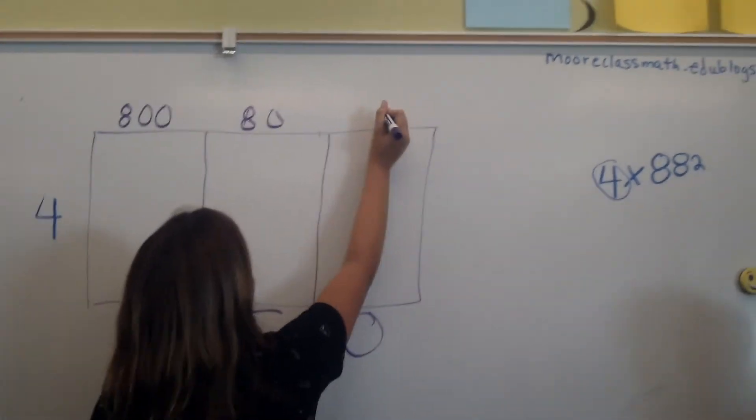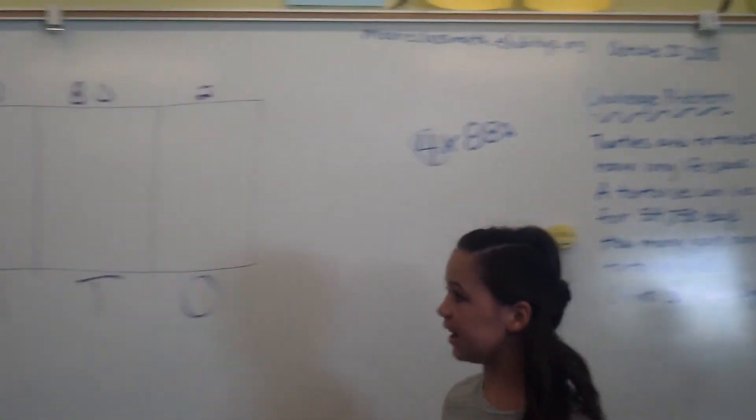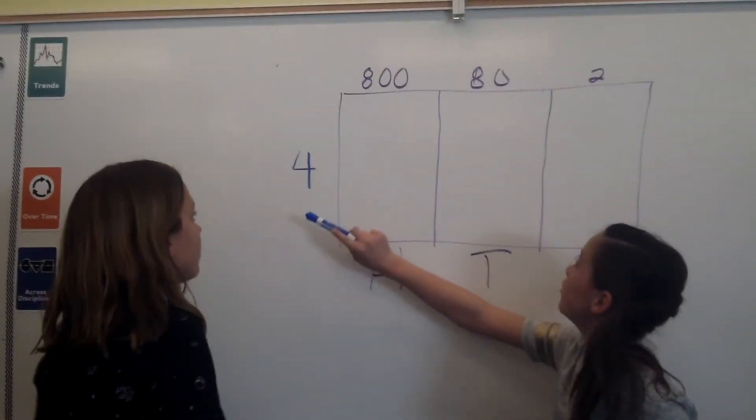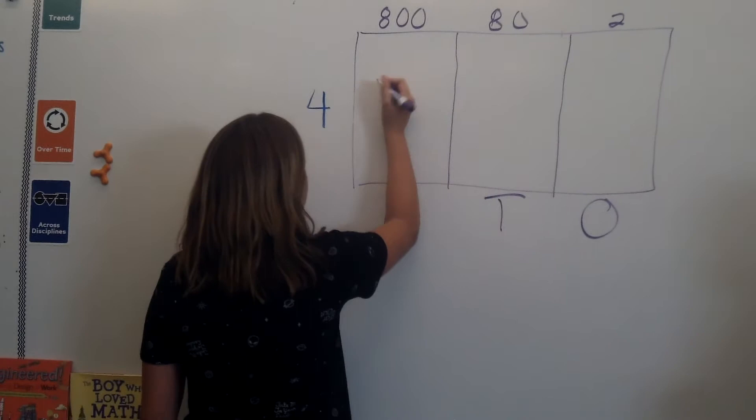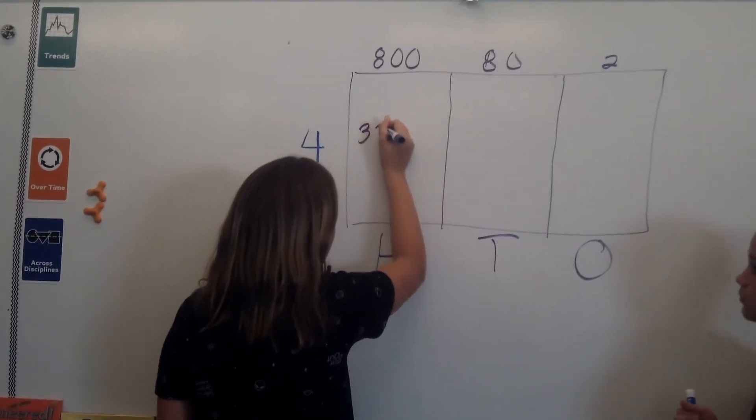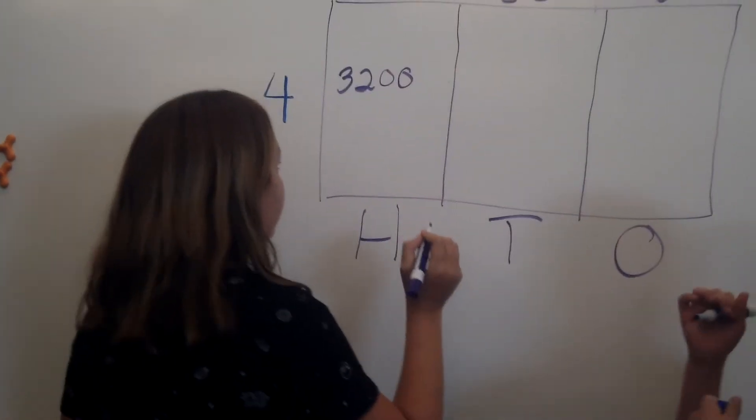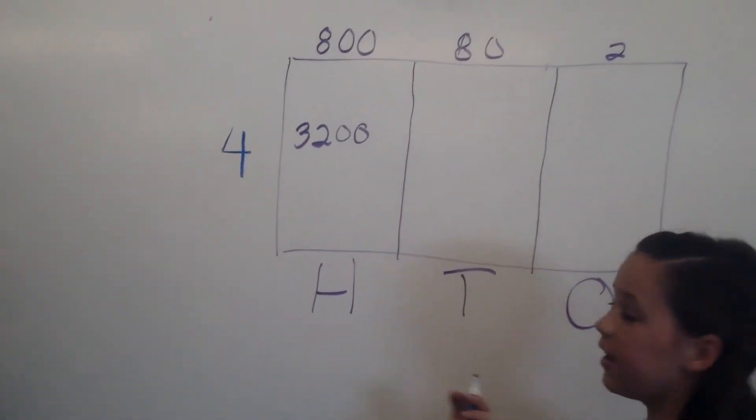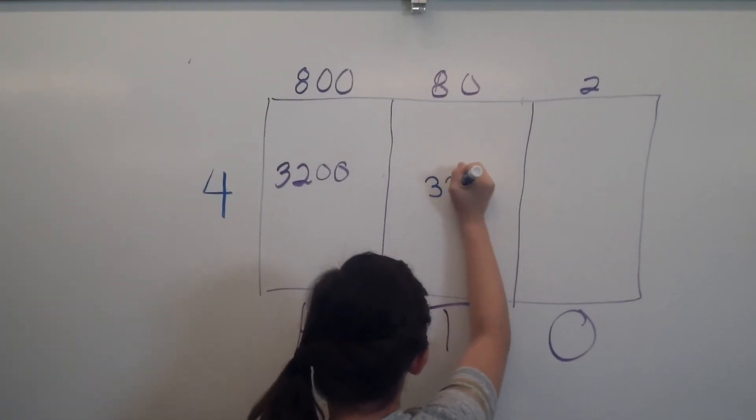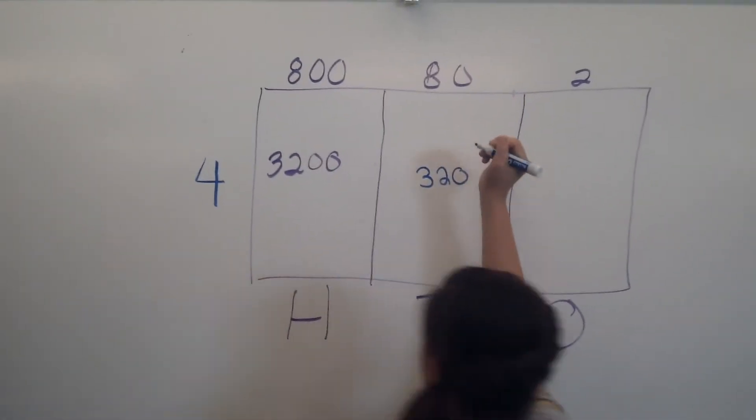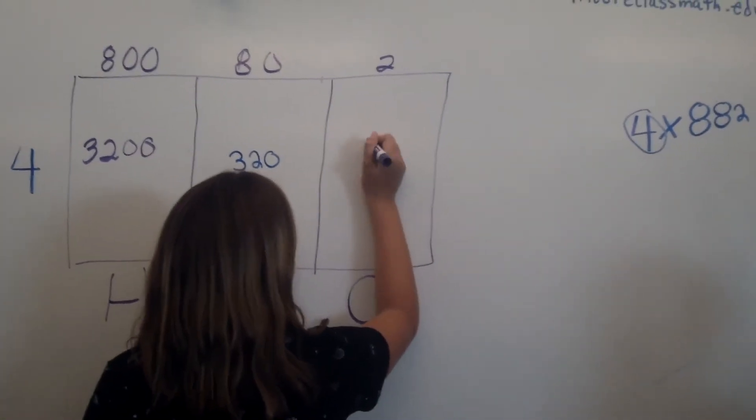and ones right there. So now you're going to times 4 times 800, 4 times 80, and 4 times 2. 4 times 8 is 32, and then you add your two zeros, so 3,200. And 4 times 8 again, 32, and you bring down your one zero. And then 4 times 2, another basic fact, 8.